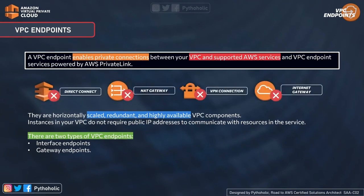The biggest question here is: what are VPC endpoints? A VPC endpoint enables private connections between your VPC and supported AWS services, as well as VPC endpoint services powered by AWS PrivateLink. A VPC endpoint does not require an internet gateway, NAT device, VPN connection, or AWS Direct Connect connection. They are horizontally scaled, redundant, and highly available VPC components.